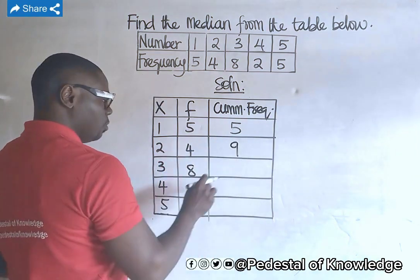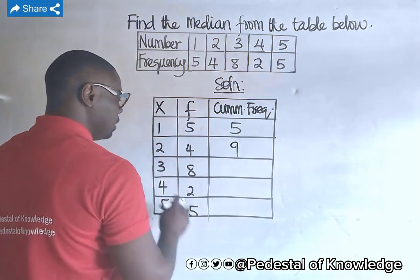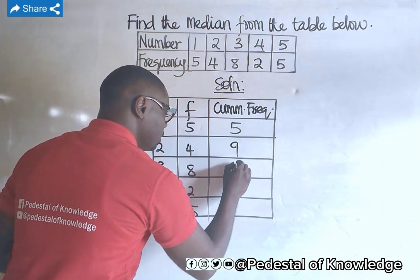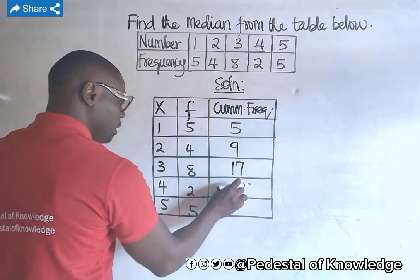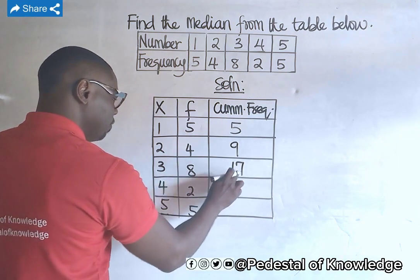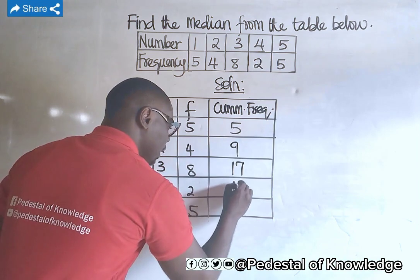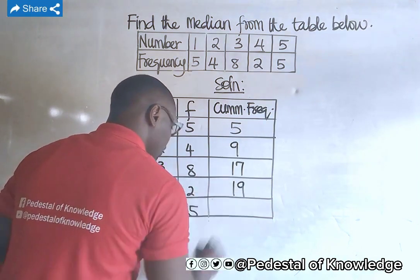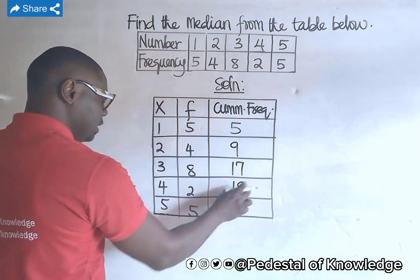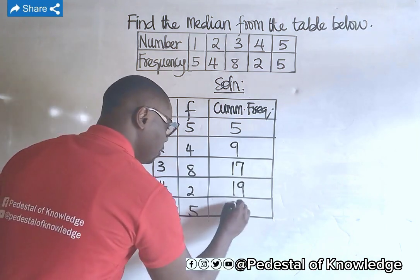The cumulative frequency for the third class is nine plus eight, which is 17. For the fourth class, the cumulative frequency is 17 plus 2, which is 19. And for the fifth class, the cumulative frequency is 19 plus 5, which is 24.